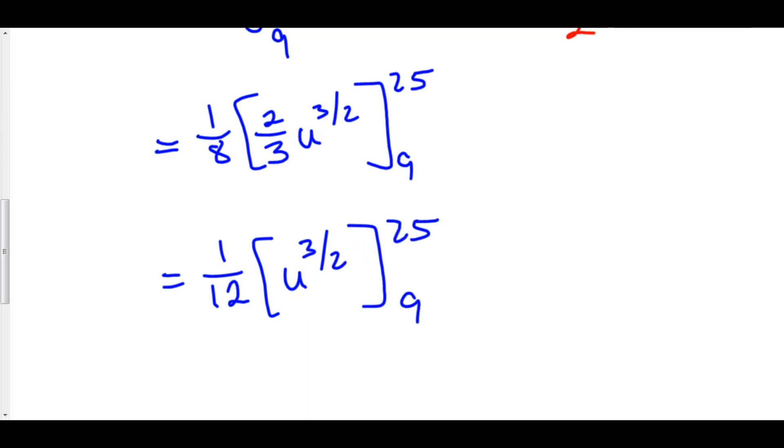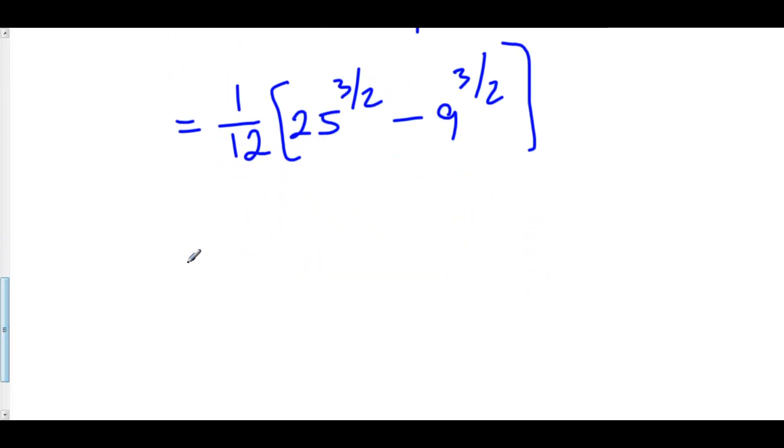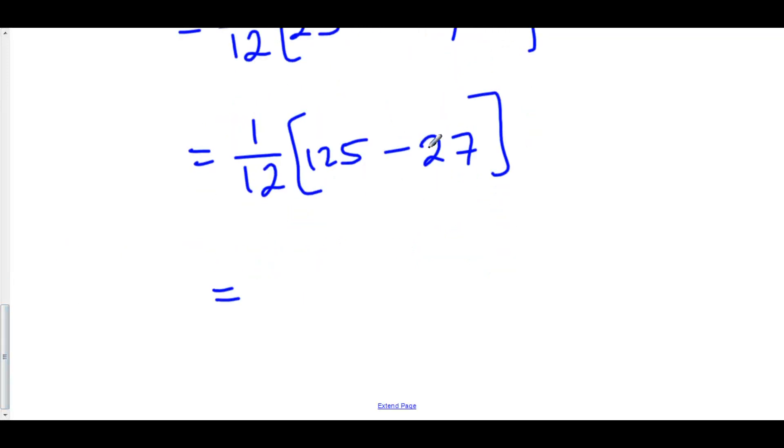And, we've got the u to the 3 halves from 9 to 25. Now, here we can use FTOC part 2 which says we take f of b minus f of a. So, we have 1 over 12 times, we'll plug in 25. That's 25 to the 3 halves. Minus, we'll plug in 9. That's 9 to the 3 halves. This is equal to 1 over 12. The square root of 25 is 5 cubed is 125. The square root of 9 is 3 cubed is 27.